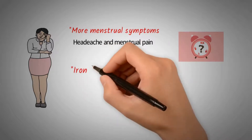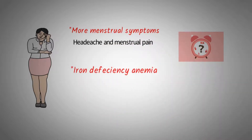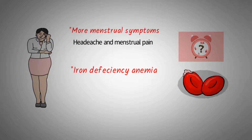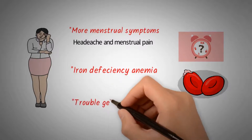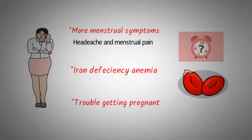The risk of iron deficiency anemia is higher for women who have IBD than for women who do not. If you have IBD, your body may not absorb iron well, and you have a higher risk of bleeding in the digestive system. During a flare-up of your IBD symptoms, you may also have trouble getting pregnant.